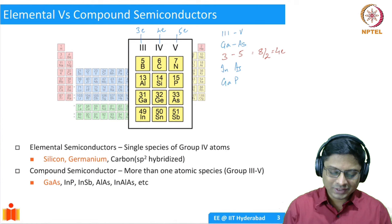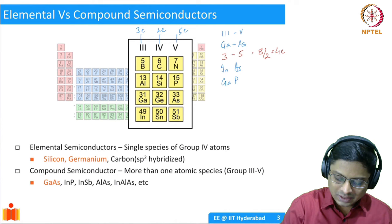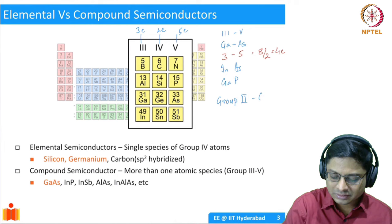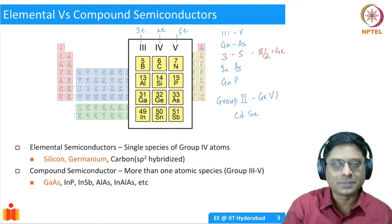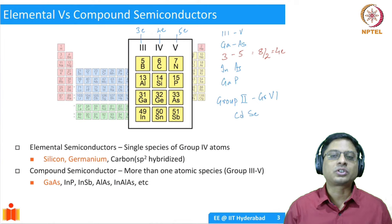You might ask: is it possible to go further out? For example, can you take a group 2 element and a group 6 element and form a semiconductor? Well, you can do that as well. One of the popular examples here is cadmium selenide — cadmium from group 2 and selenium from group 6 — which is a good semiconductor. So you could have various combinations of compound semiconductors this way.